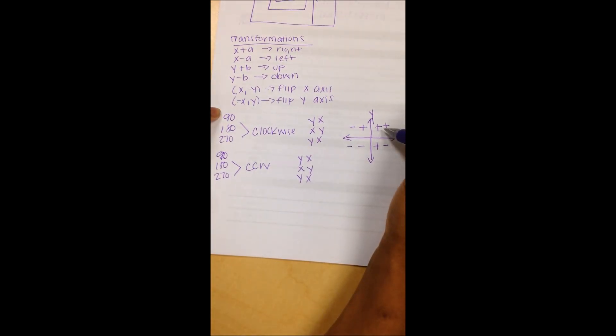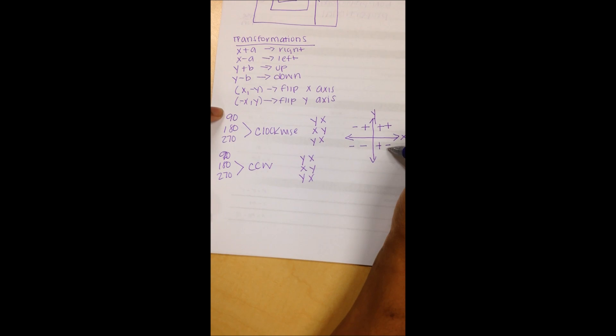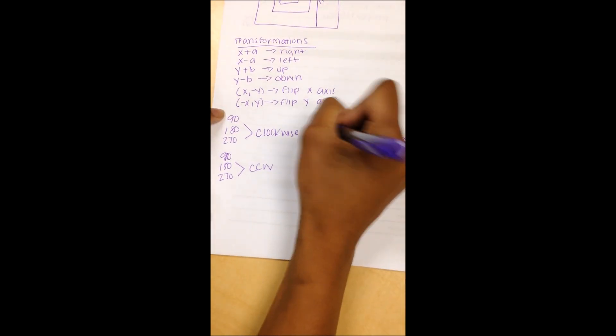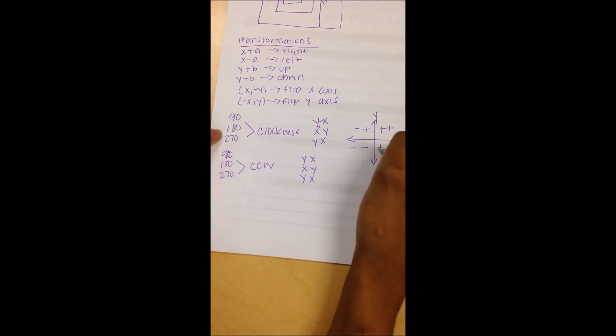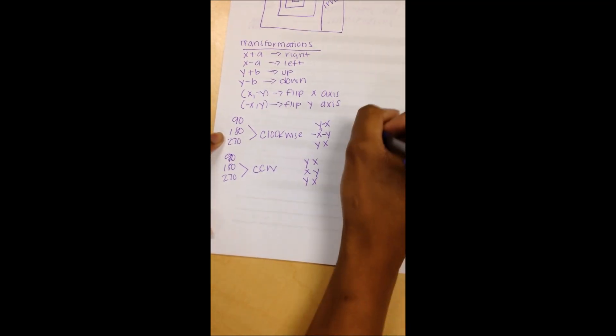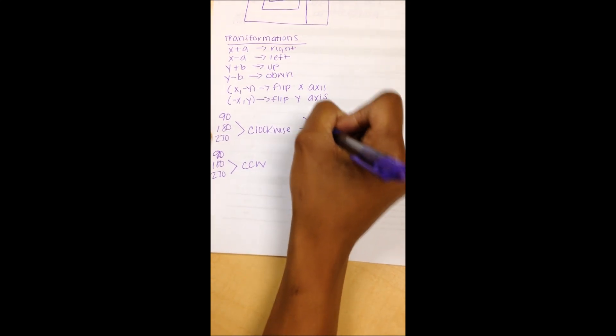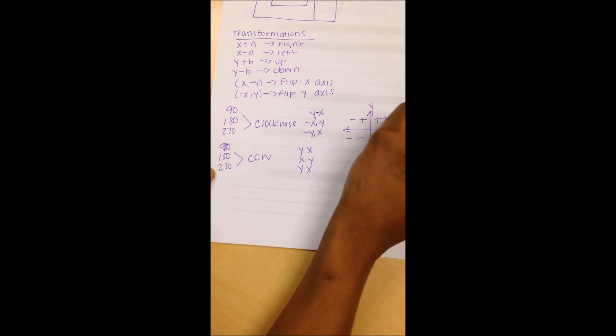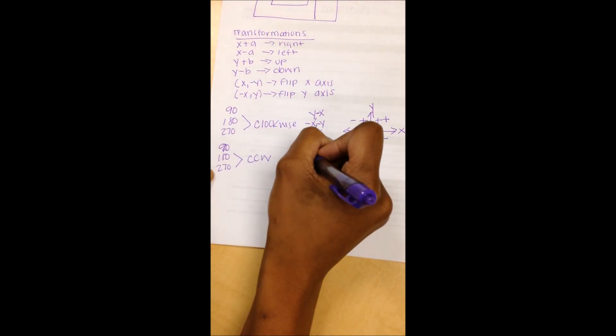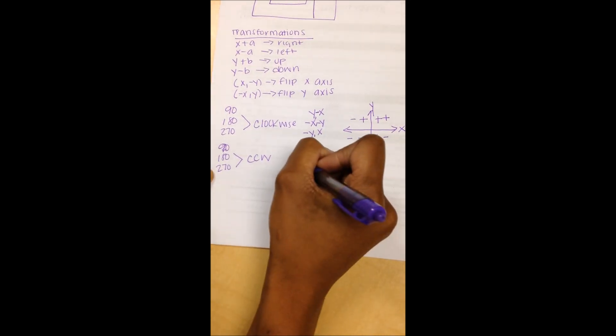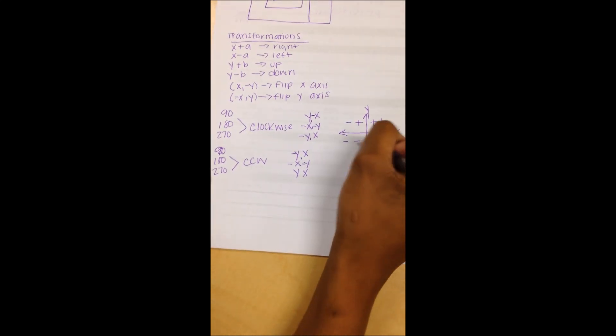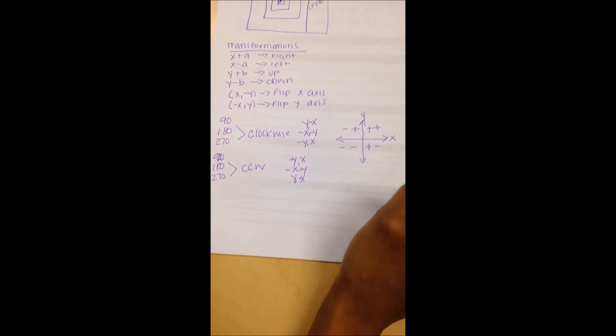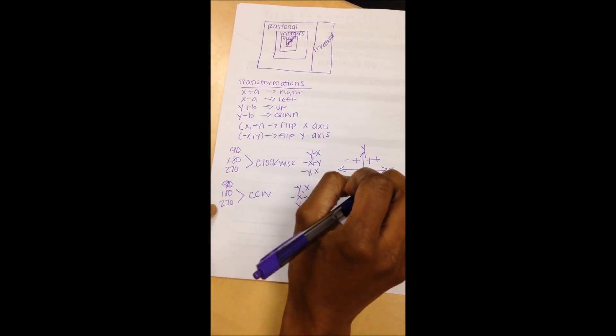And then I actually map out what my rotation would be. So if I'm going 90 degrees clockwise, I will be moving one quadrant to the right, so my x would be positive. My y would be positive and my x would be negative. 180, both are negative. 270, y is negative, x is still positive. Then with counterclockwise, I move the opposite direction. So my y would be negative, x would be positive. 180 is negative, negative. And 270 would be y positive, x negative. And I am done with my transformations.